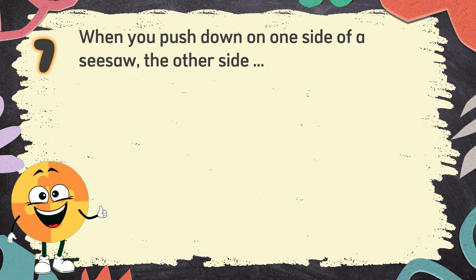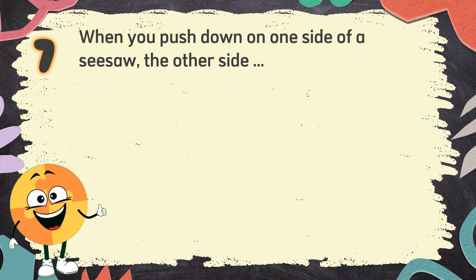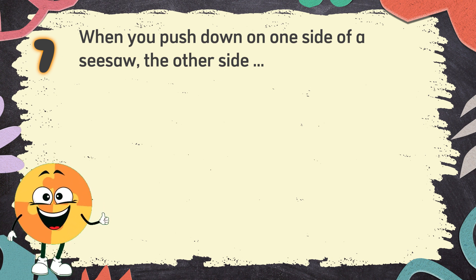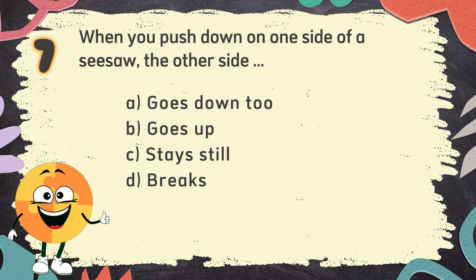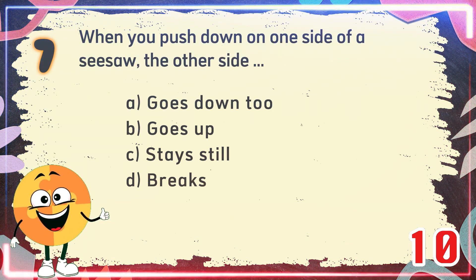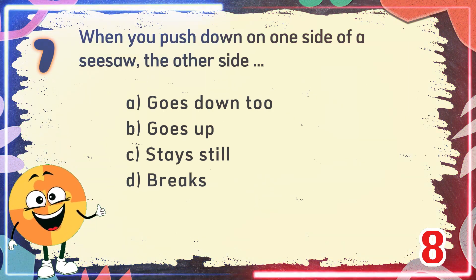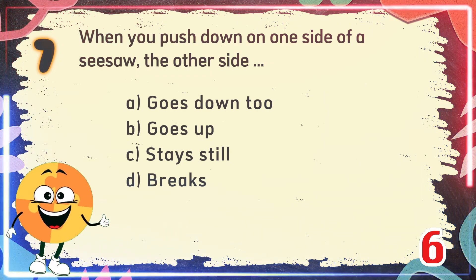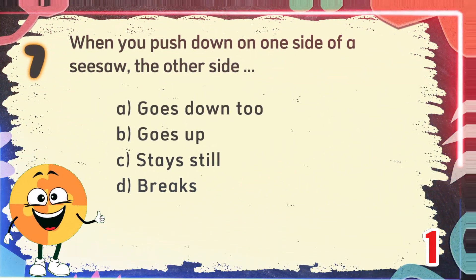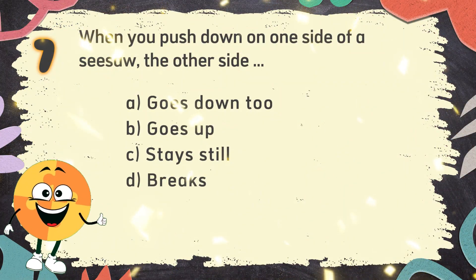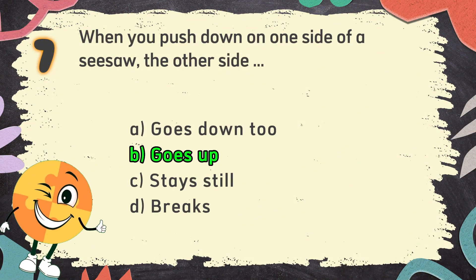Number 7. When you push down on one side of a seesaw, the other side... The choices are A. Goes down too, B. Goes up, C. Stays still, D. Brakes. The correct answer is B. Goes up.